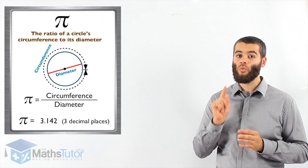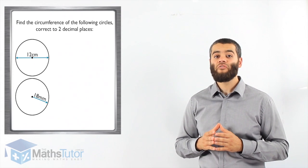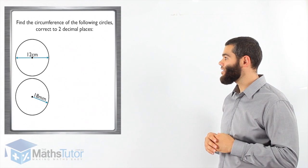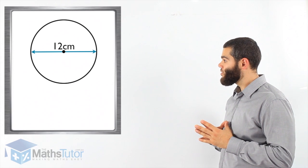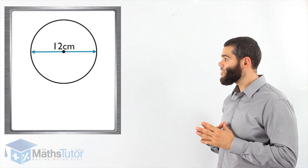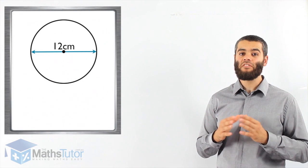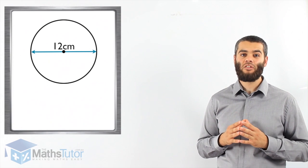The question says find the circumference of the following circles correct to two decimal places. The first circle, we notice we have a diameter, and we know the diameter is the line, it's an interval that goes through from one end of the circle to the other end of the circle and it goes through the center.